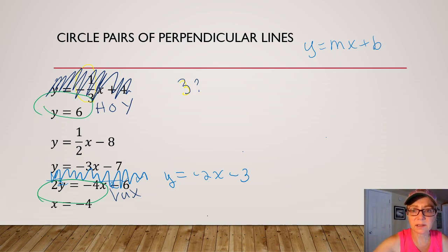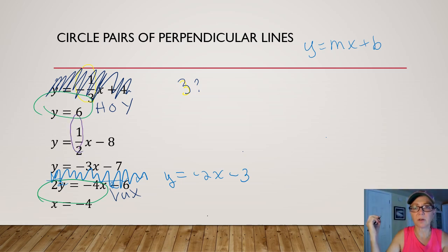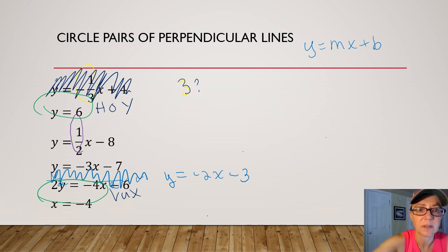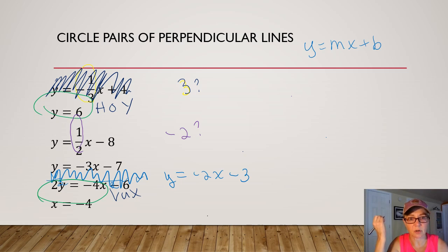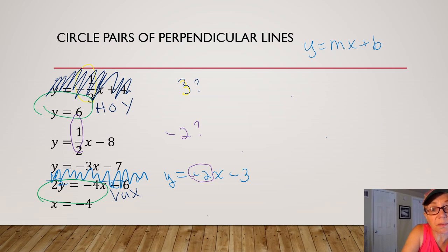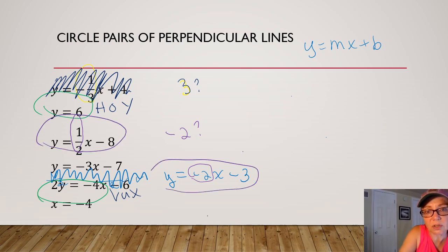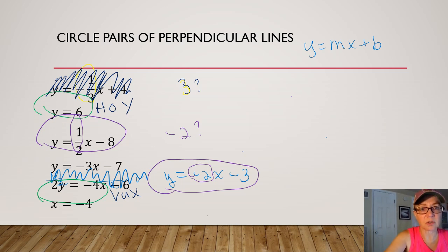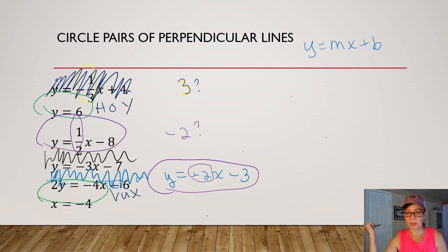The next equation has a slope of positive one half. The opposite reciprocal of positive one half is negative two. Looking for an equation with a slope of negative two — there it is. So this equation and that equation are perpendicular. That leaves one more equation without a partner, so I'll scribble it out. Well, that's all there is to parallel and perpendicular lines. Thank you for watching.